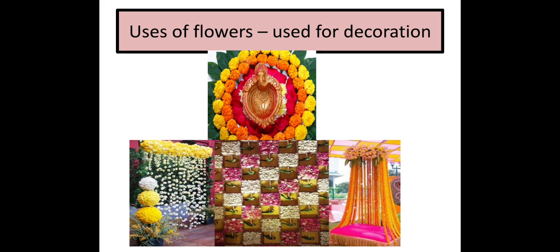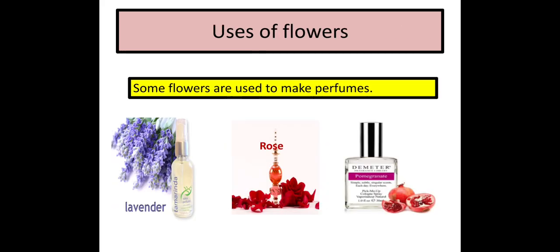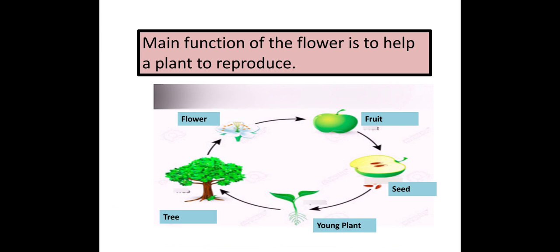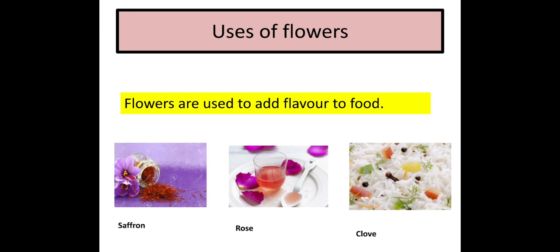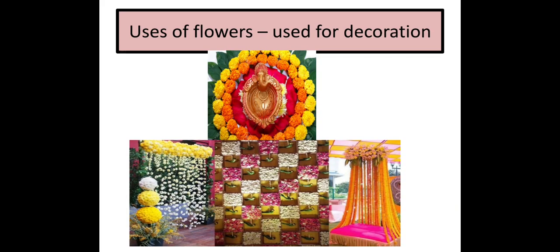I have told you four uses of flowers. Let's recall the four different uses: Number one, flowers help a plant to reproduce. Number two, flowers are used to make perfumes. Number three, flowers are used to add flavor to our food. And number four, flowers are used for decoration.